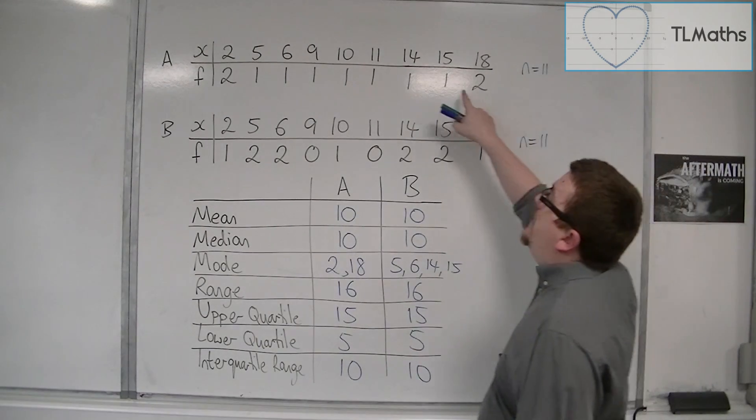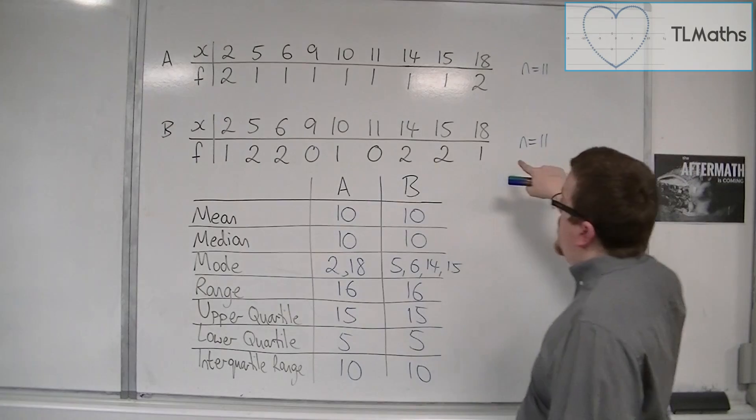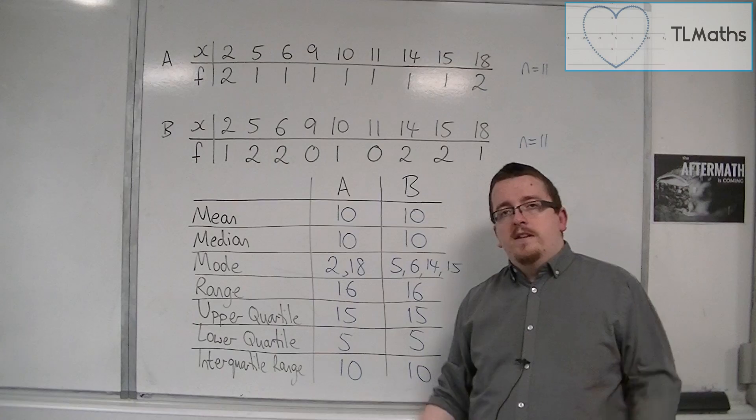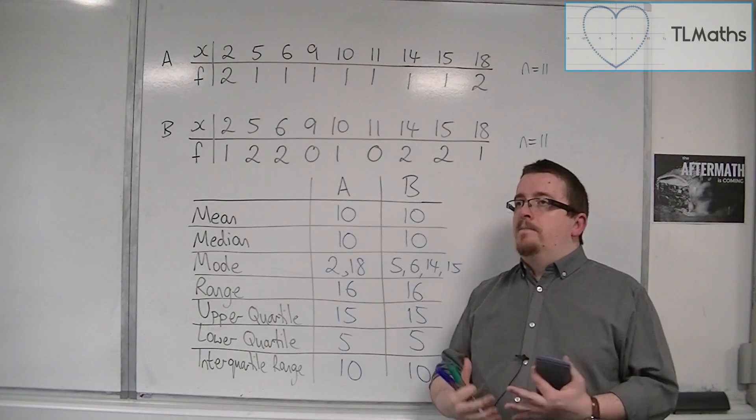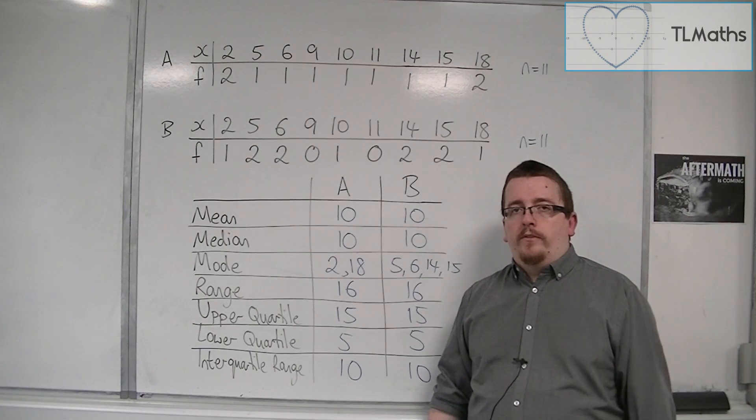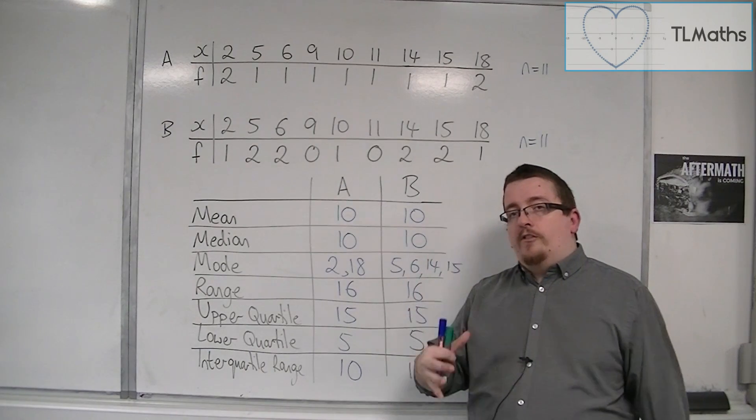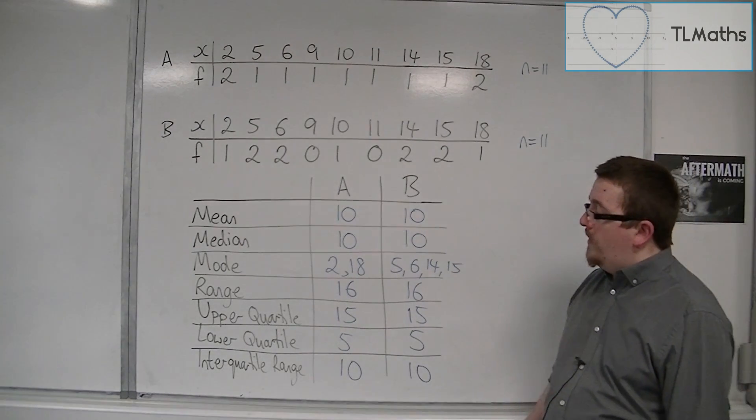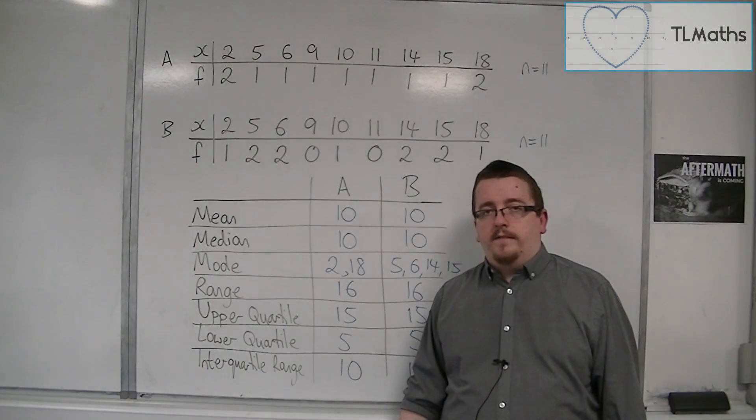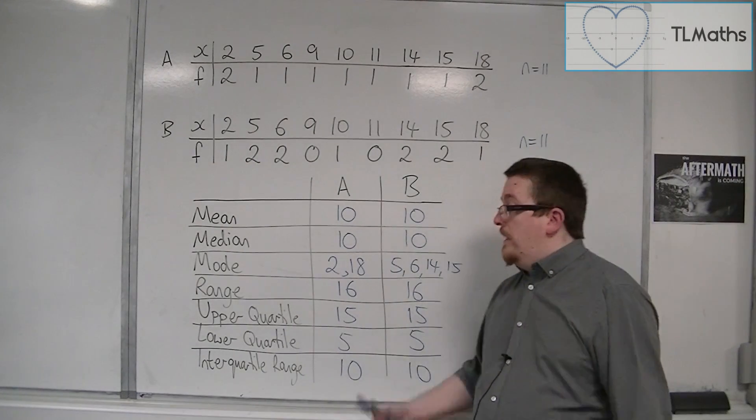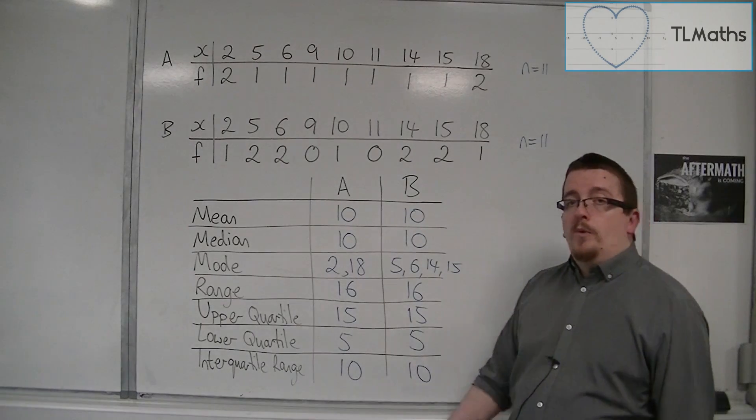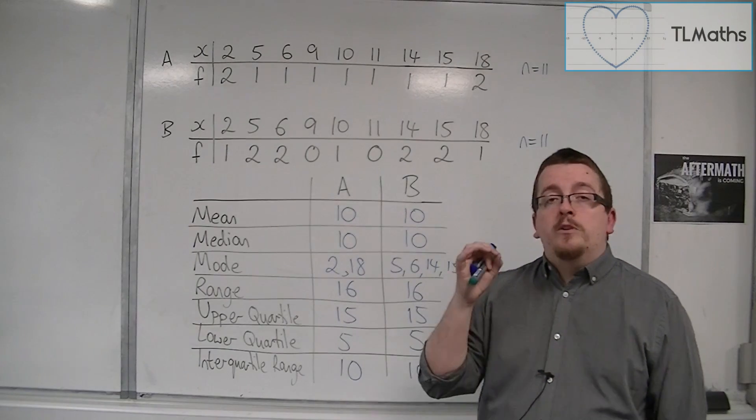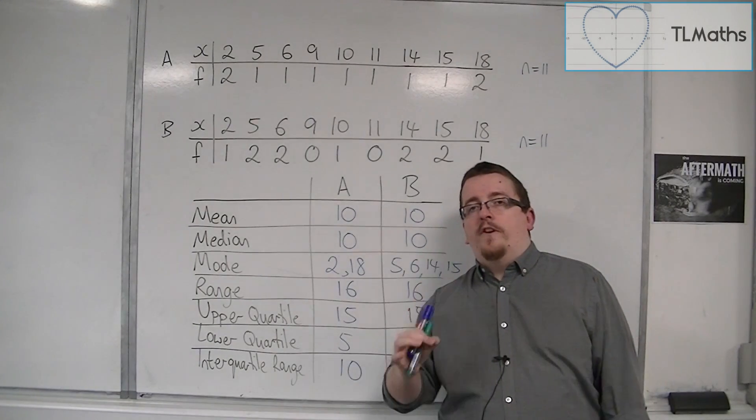So what can we compare them with? Because clearly, the data is very different in the sense of how it's spread out. So there must be another way of assessing how spread out this data is. So that's where the standard deviation comes in. Because everything that we learned at GCSE hasn't enabled us to compare the data. Because everything is coming up exactly the same. So we're going to learn a technique in the next couple of videos, the standard deviation, which is going to enable us to compare this data in finer detail.